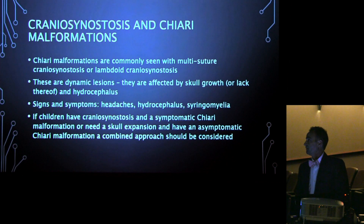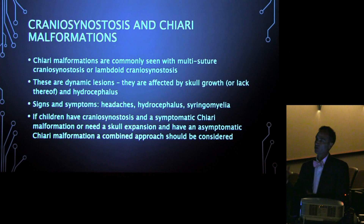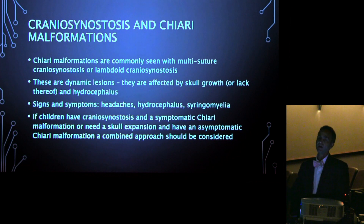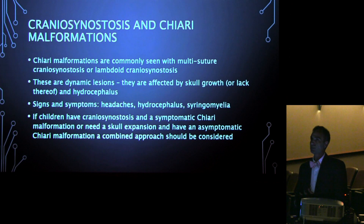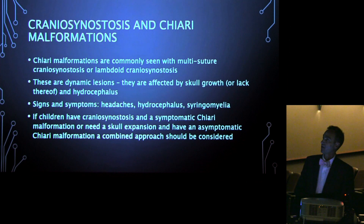In craniosynostosis associated with Chiari malformations, it usually takes more than one suture to be closed. You can have complex craniosynostosis with more than one fused suture, or you can have a lambdoid suture fused — the lambdoid sutures are in the back of the head — and that lambdoid suture fusion causes decreased volume of the posterior fossa, which then causes the Chiari malformation. It would be unusual to see Chiari associated with a metopic or coronal suture fusion alone; those would likely be incidental.